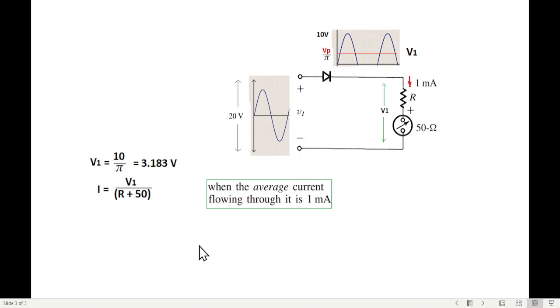And as shown here also given in the question that the maximum average current flowing is 1 milliampere for full scale deflection. So we'll use that. So 1 milliampere here, this volt is 3.18 and the resistance R plus 50. So from here, R plus 50, we can calculate to be 3183 ohm.